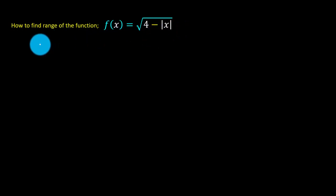To find the range of this function, let us assume that t equals square root of 4 minus absolute value of x. We already know that a square root of anything is non-negative, hence t is greater than or equal to zero. Let us save it for a moment.